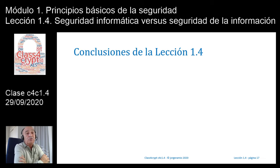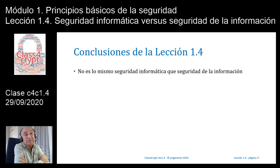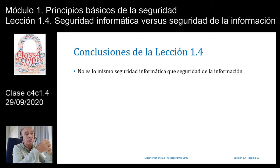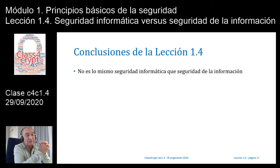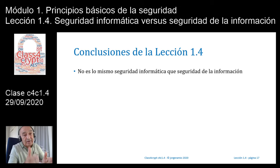Como conclusiones podemos decir que no es lo mismo seguridad informática que seguridad de información. Quizás en el siglo pasado, años 80 y principios de los 90, sí se hablaba solamente de seguridad informática porque había muy poco tema de redes y no existía tanto la parte de gestión. Todas las normas ISO —que vienen de normas británicas BSS— comienzan a utilizarse a finales del siglo pasado, pero en los años 80 y principios de los 90 no se hablaba tanto de la gestión de la seguridad, sino que se intentaba simplemente salvar equipos, ordenadores, software, datos y el entorno de red local.